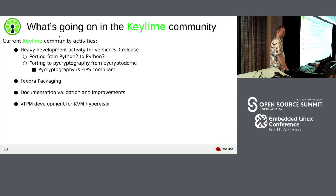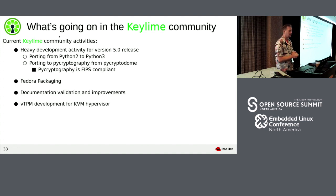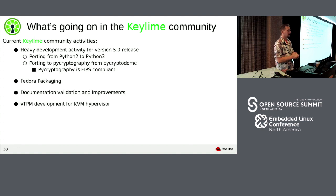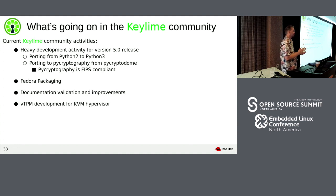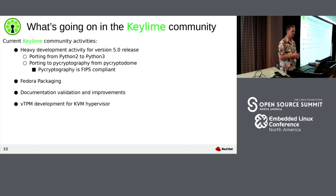To wrap up what's going on in the KeyLime community: we have a couple of tasks being tackled right now. There's heavy development on our version 5 release — a major port from Python 2 to Python 3. We're also porting the cryptography libraries to PyCryptography, which is FIPS compliant. We're working on Fedora packaging, building out documentation and user guide files, and doing virtual TPM development for the KVM hypervisor.